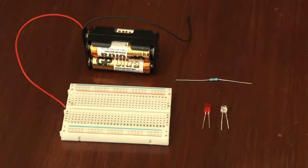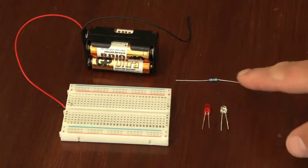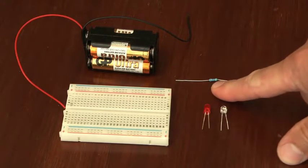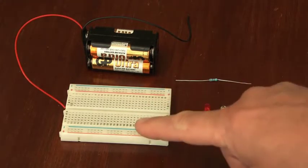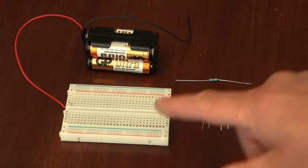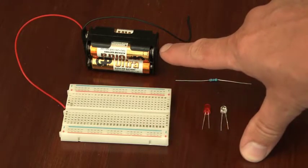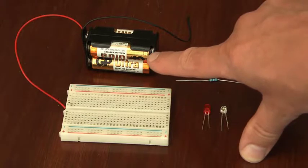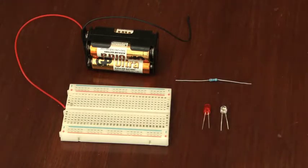For this program we're going to use a couple of LEDs, a 500 ohm resistor, a breadboard, and a four cell battery pack that's going to be giving us six volts.